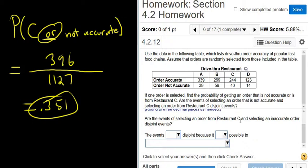Are the events of selecting an order from restaurant C and selecting an inaccurate order disjoint events. So they're disjoint if they cannot occur together. But you can order from restaurant C and get an inaccurate order. In fact, there's 40 ways to do that. If you go to order not accurate and restaurant C, that's where they meet up.